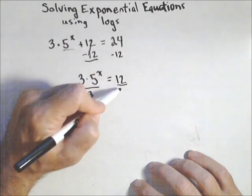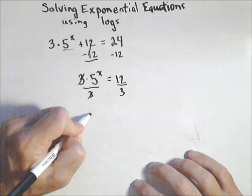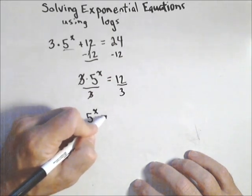Next step, we'll divide both sides by three. And over here, this actually simplifies kinda nice. We end up with five to the x equals four.